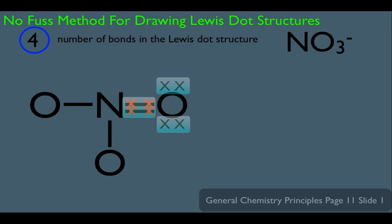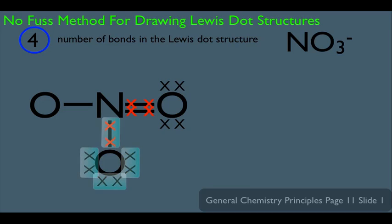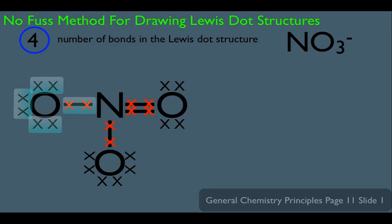We do this for every atom in the molecule. For the bottom oxygen, it would need three lone pairs, because that gives it eight total electrons around it. The oxygen on the left would also have three lone pairs so that it has a total of eight electrons around it.